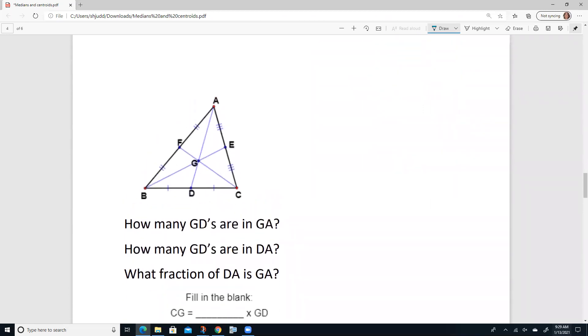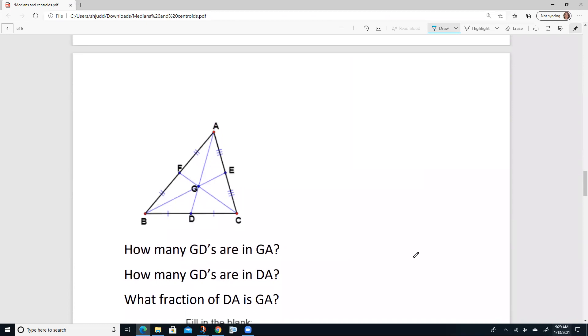Now let's actually reference back to what was said earlier about the lengths of the median. So we're going to focus on this middle median here. All the medians have the same principle. We're going to focus on this one. So it says, how many GDs are in GA?